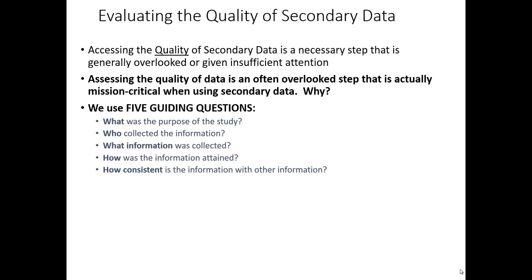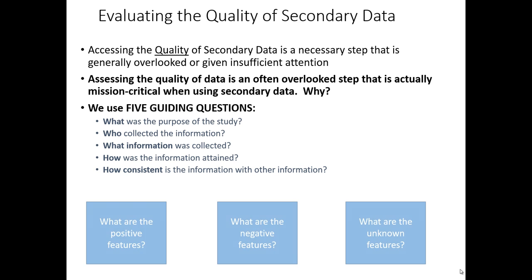While we ask these five questions, there are three buckets of answers we may place our answers into. First, some features may be positive, enhancing the quality of the secondary data in our mind. Then we'll notice there are usually some negative aspects. And finally, most frustratingly, many times the necessary details we want to know about how secondary data was generated are simply not available — they are unknown features — and we have to make a judgment call about whether we can live with those uncertainties.